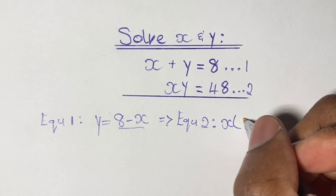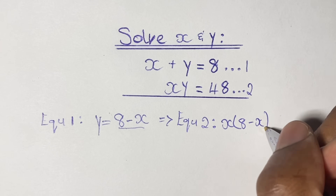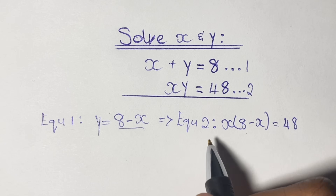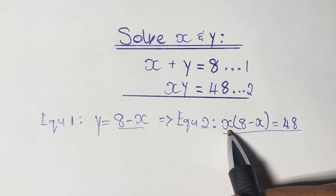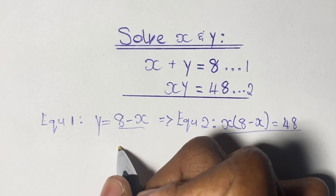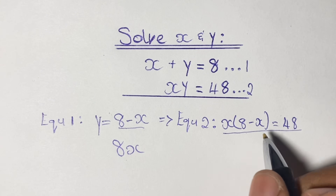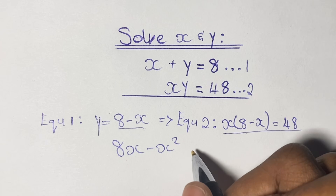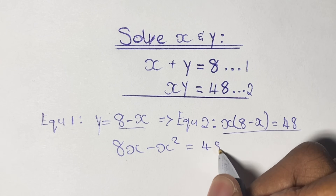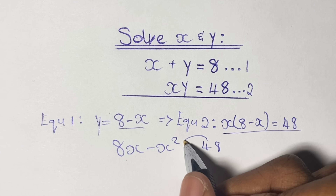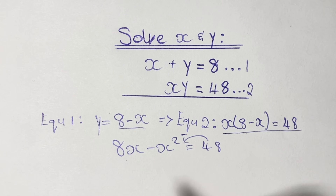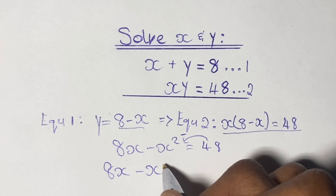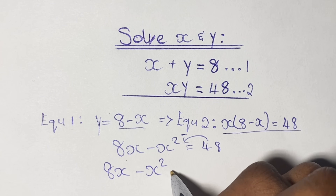So we have x times y, and since y is 8 minus x, we get x times (8 minus x) equals 48. Expanding the brackets gives us 8x minus x squared equals 48. Bringing 48 to the left-hand side, we have 8x minus x squared minus 48 equals 0.